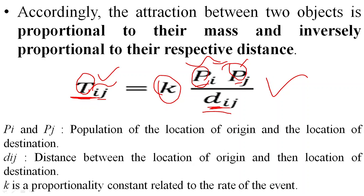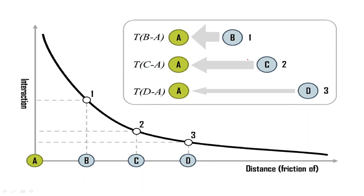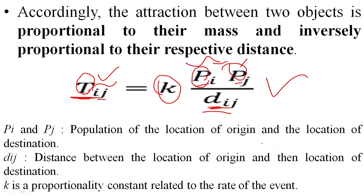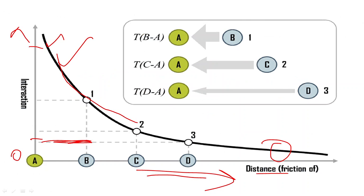Looking at the diagram illustrating the distance factor: when distance between A and B is less, interactions and tourist flow are greater. As distance increases — distance one, two, three — interactions decrease. Starting from zero, as distance increases toward N, interactions decrease toward N. So distance is increasing and interactions are decreasing.